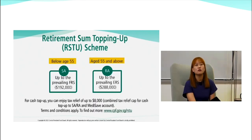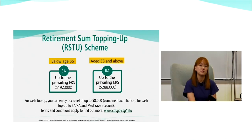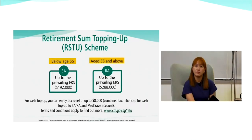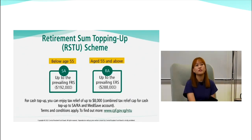There's also the Retirement Sum Topping-Up Scheme, or RSTU. This scheme aims to grow your retirement savings so you can earn higher monthly payouts in retirement. For those below age 55, top-ups go into your SA, up to the prevailing Full Retirement Sum of $192,000 this year. For those aged 55 and above, top-ups go into your RA, up to the Enhanced Retirement Sum of $288,000.